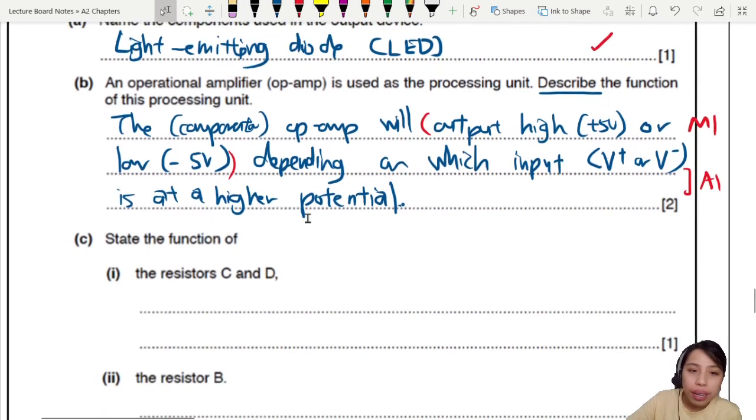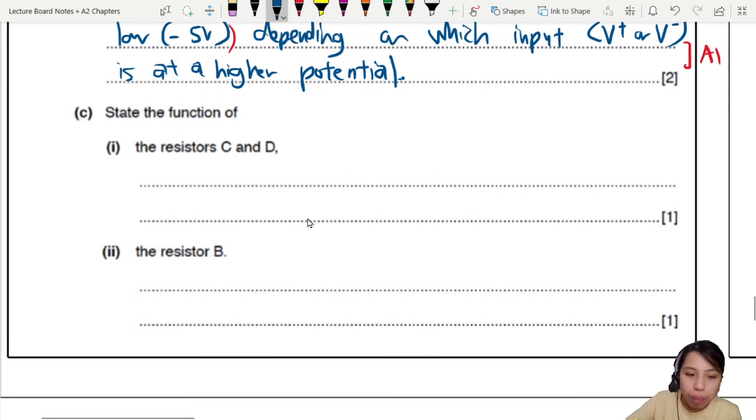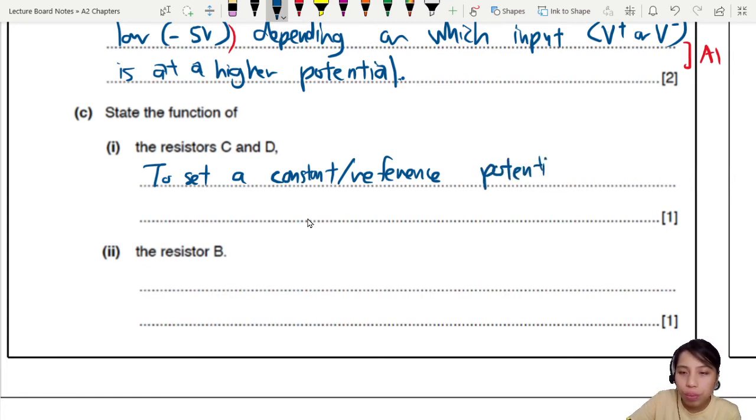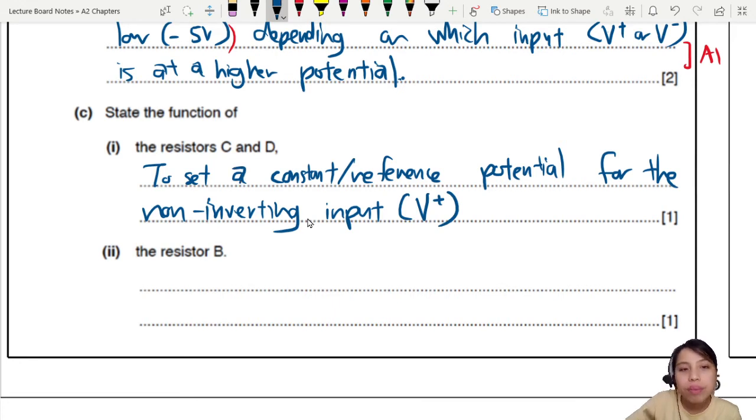So how are we going to say that? We can say that the purpose of that is to set a constant potential. Constant or reference potential. If it's 4.5 volts, it's just always 4.5 volts. So reference potential for the non-inverting input. Also known as the V plus input. This is a name for it. One mark.